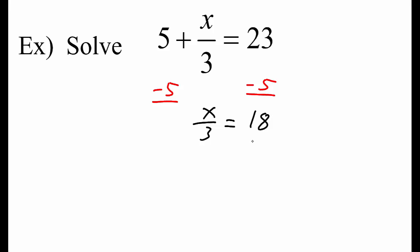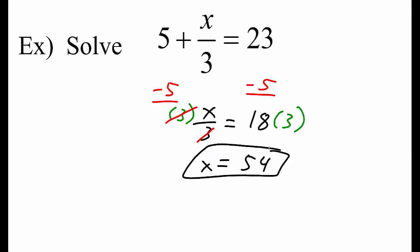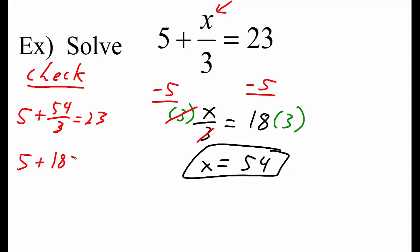To undo division we multiply, but we need to keep everything balanced so we also have to multiply by 3 on the right side. 3 divided by 3 equals 1, leaving us with x on the left side. 18 times 3 is 54. We'll substitute 54 for x in the original equation, and it works.